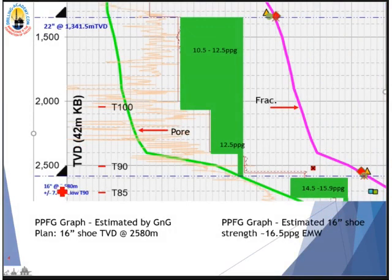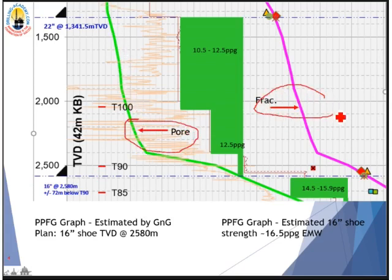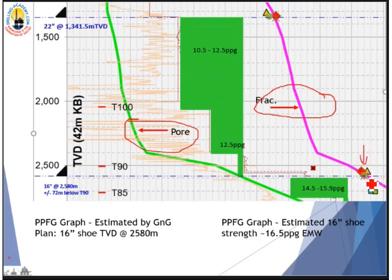Now the next example is a 16-inch casing shoe using the same pore pressure and fracture gradient graph. The 16-inch shoe is planned at 2,580 meters TVD. Offset well data — shown as red and yellow dots — gives the geologists' estimate of shoe strength at around 16.5 ppg equivalent mud weight. Again, this is a theoretical number.